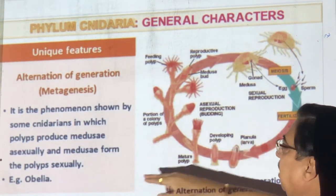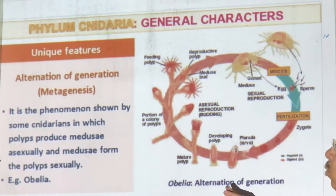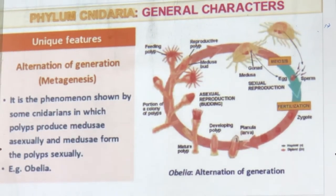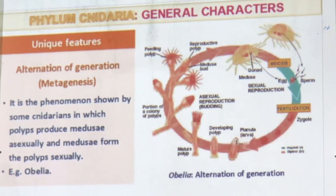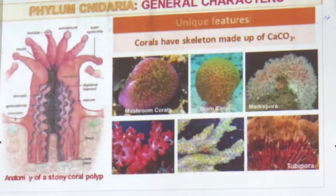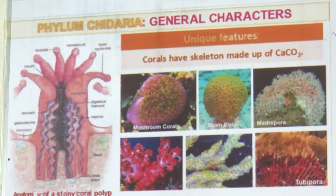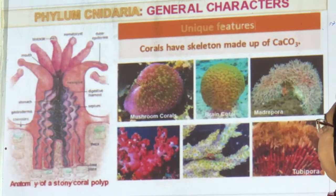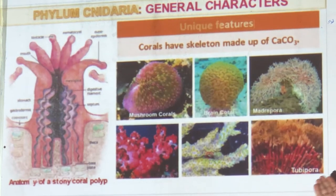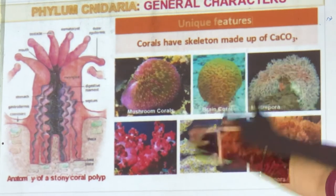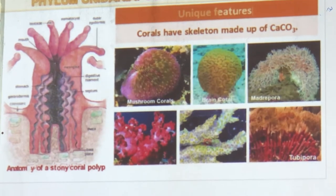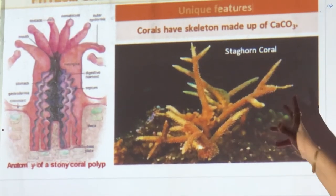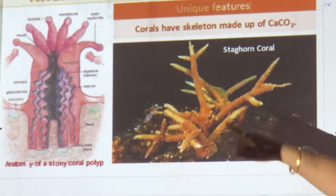Obelia is a good example of metagenesis — it grows in large colonies of 200-500. The skeleton in corals is made up of calcium carbonate. Corals are very famous and expensive — the red stone you buy in jewelry is a coral. Examples include mushroom coral, brain coral, and Madrepora. The brain coral looks like cerebral tissue. Deep, clean water is where corals are found. The Great Barrier Reef is the biggest coral reef in the world. Corals are becoming extinct as people break pieces and take them home.